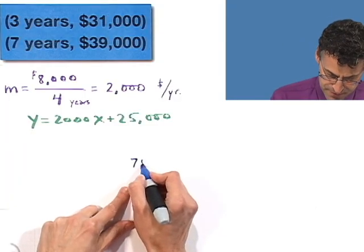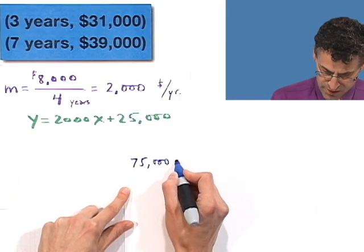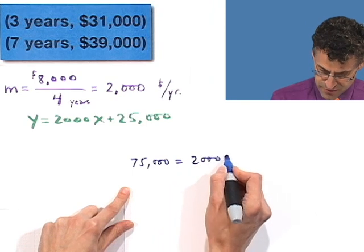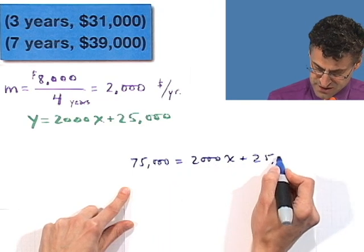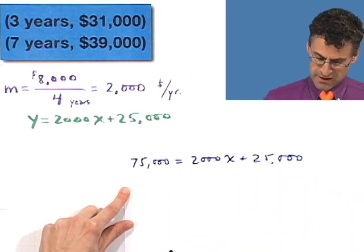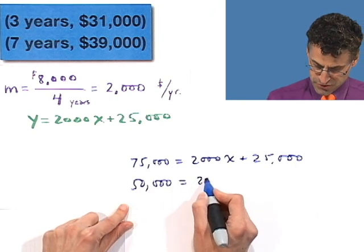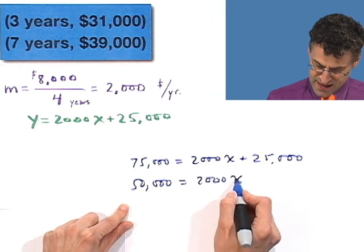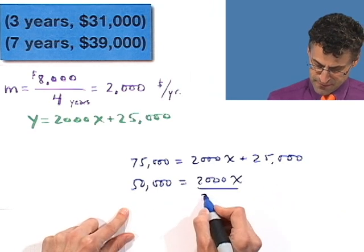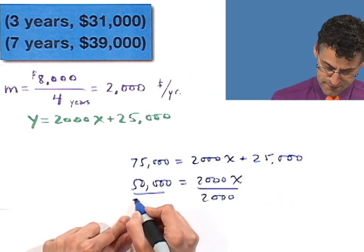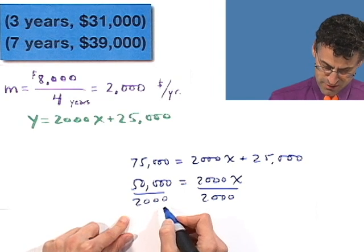In this case, we now know that this has to be 75,000, and I want to find out how long I have to wait for that payday. So I'm solving for x. Subtract 25,000 from each side. I get 50,000 equals 2,000x. Divide both sides by 2,000, and what do I see?